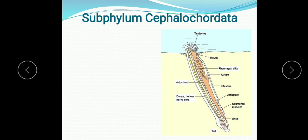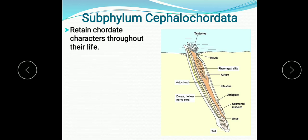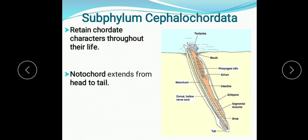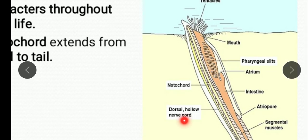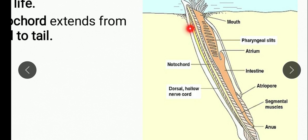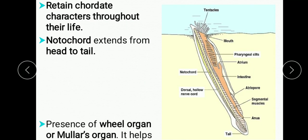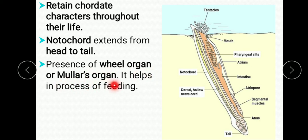Now we will study sub-phylum Cephalochordata. They retain chordate characters throughout their life. Unlike Urochordata where chordate characters are found only at the larval stage, in Cephalochordata all chordate characters — notochord and gills — are present throughout their life. Notochord extends from the head to the tail region. Dorsal hollow nerve cord is also present, and there is the presence of a wheel organ or Müller's organ.